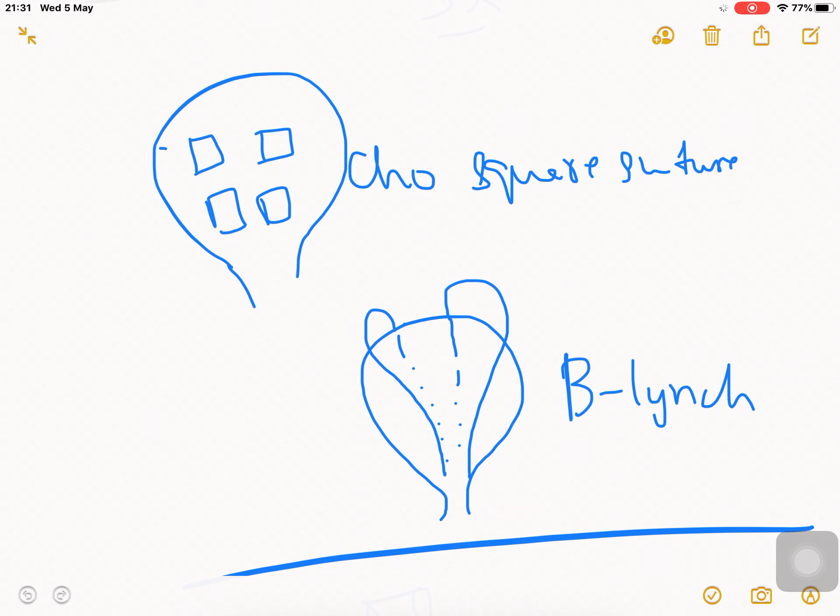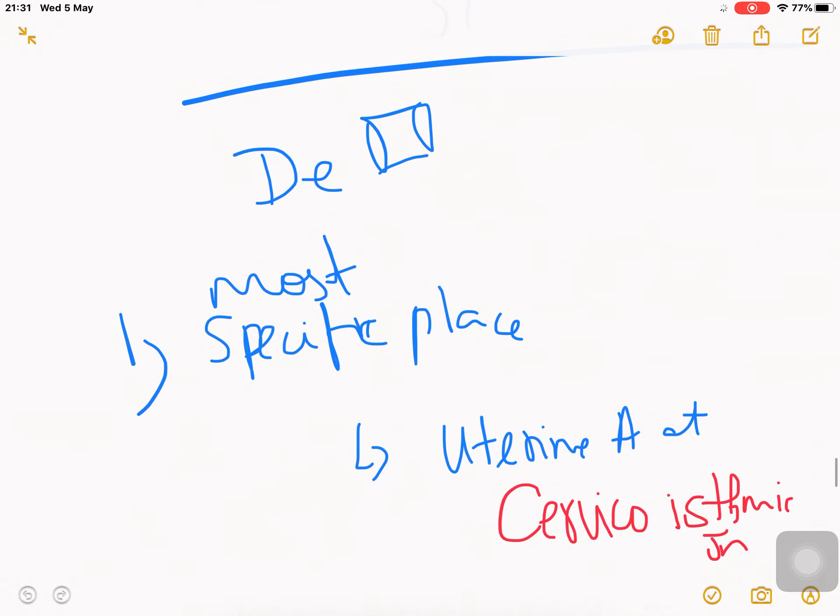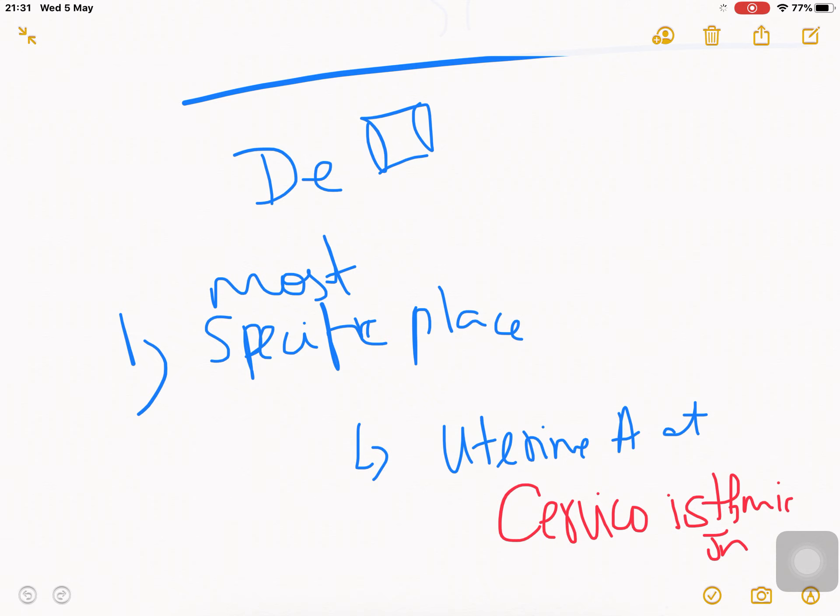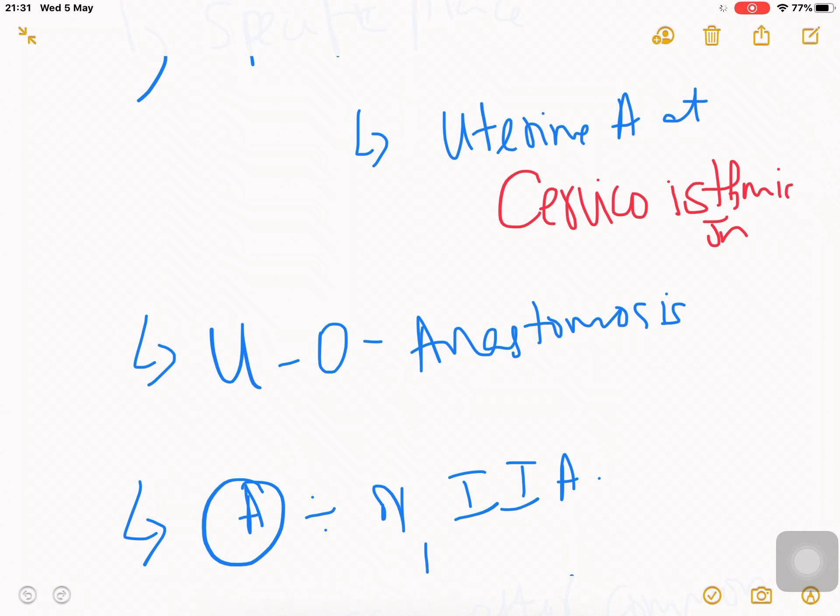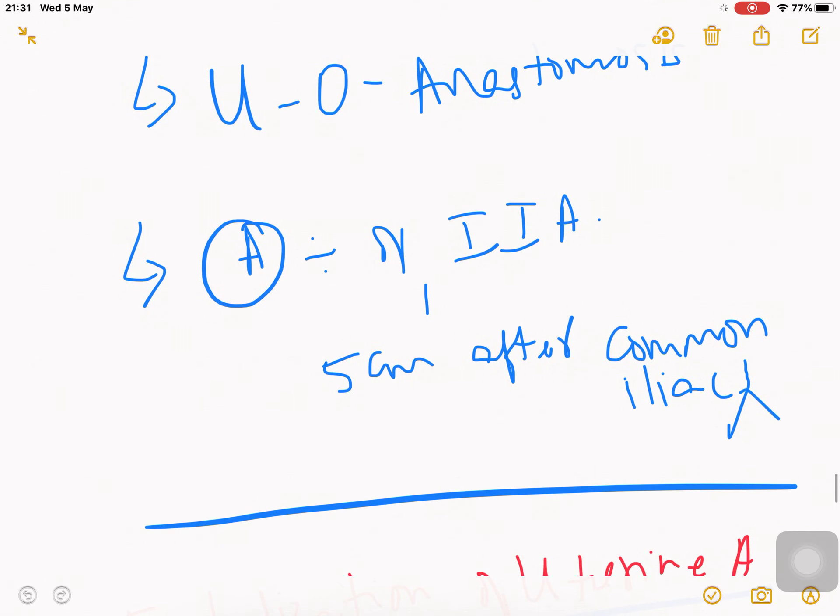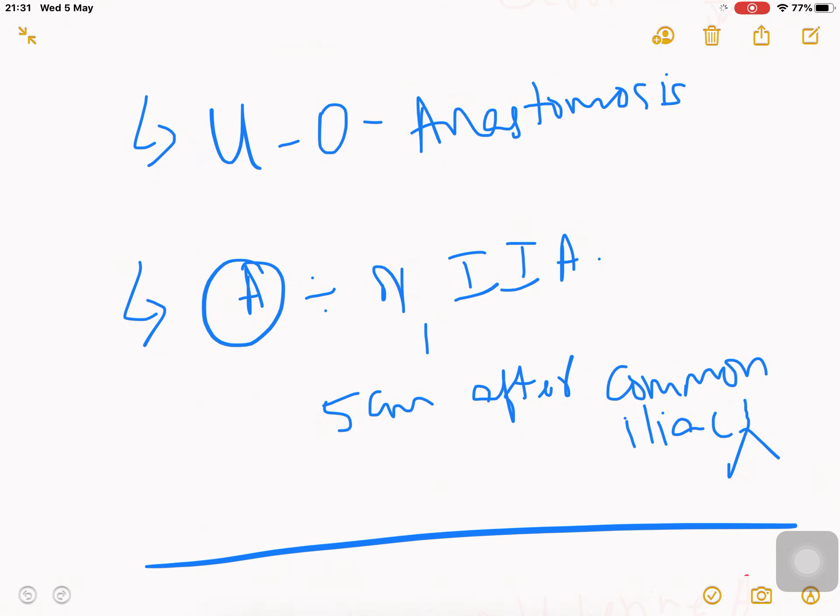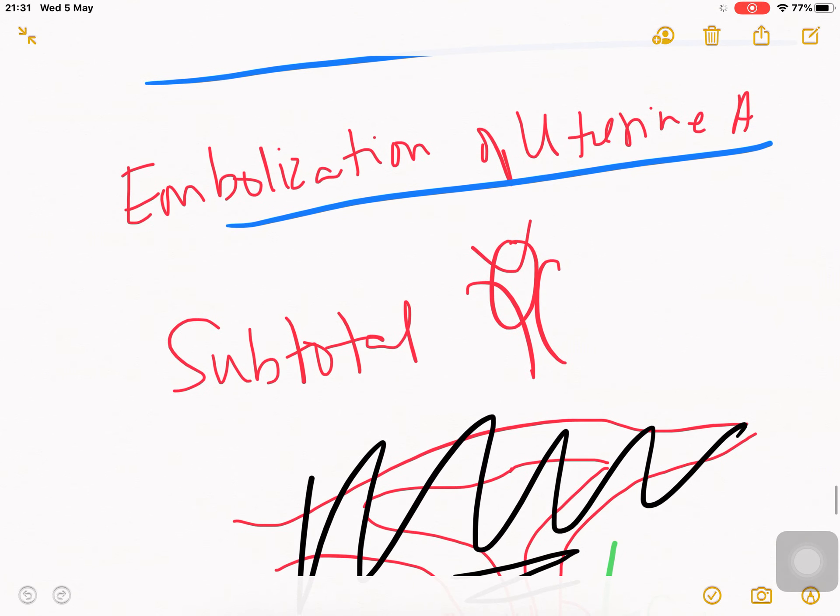Stepwise devascularization is done from more specific to more distant places. First, uterine artery ligation at the cervico-isthmic junction. Second, uterine-ovarian anastomosis. Third is the anterior division of internal iliac artery, five centimeters distal to the bifurcation of the common iliac artery. Then uterine artery embolization if bleeding still doesn't stop.